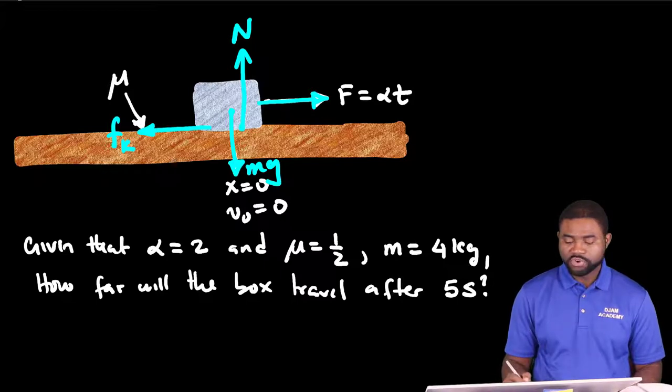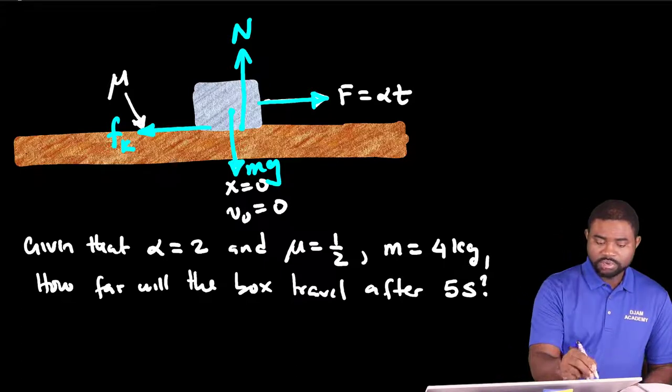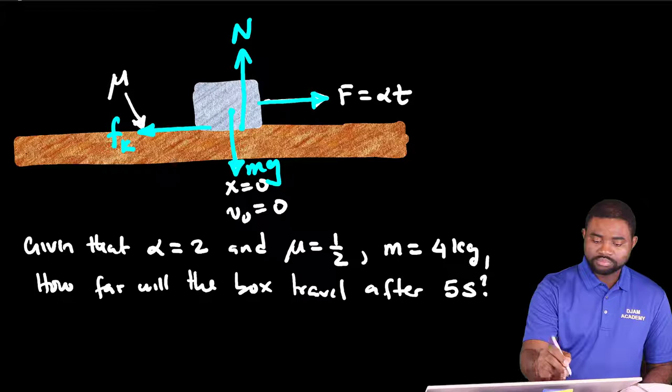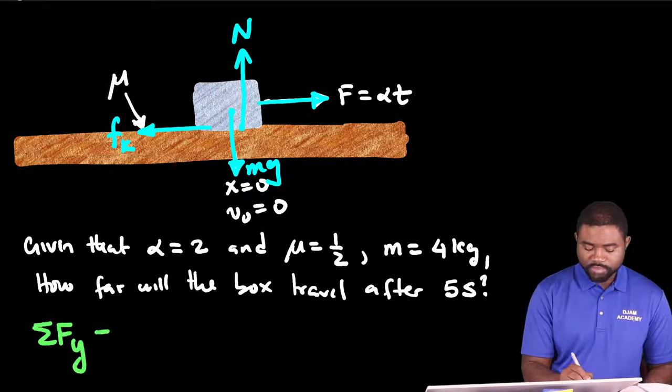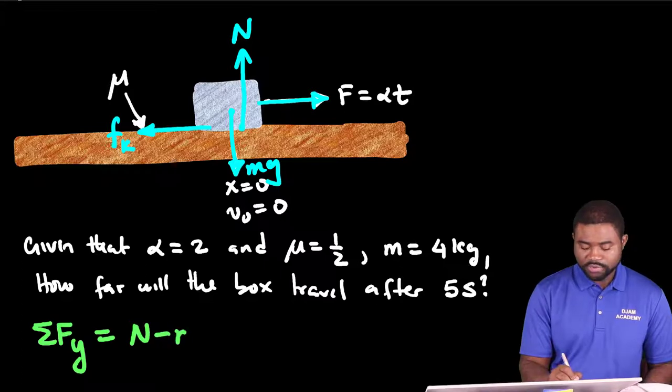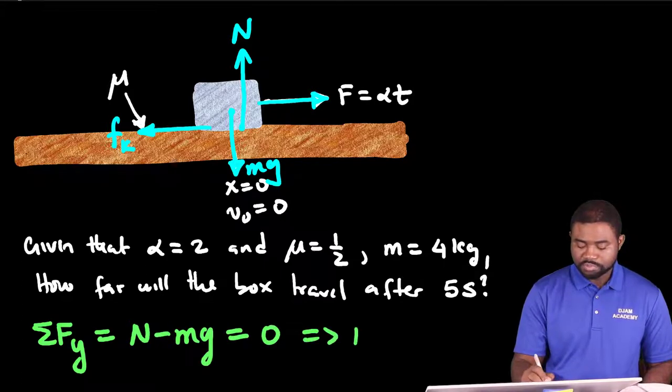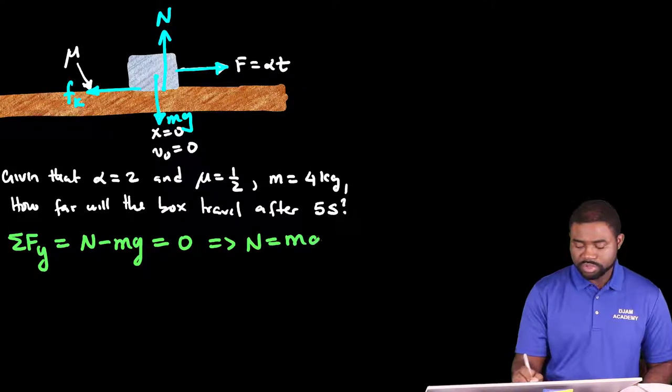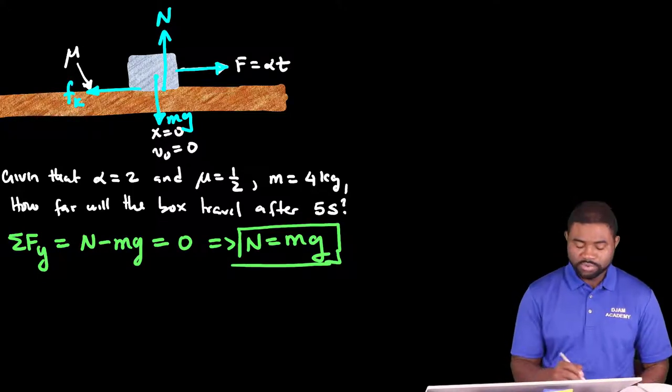The next step is to apply Newton's second law equations in both directions. I'm going to start with the y direction. The summation of Fy is equal to N minus Mg. This is equal to 0. This means that N is equal to Mg. So this is the expression for the normal force acting on the box.